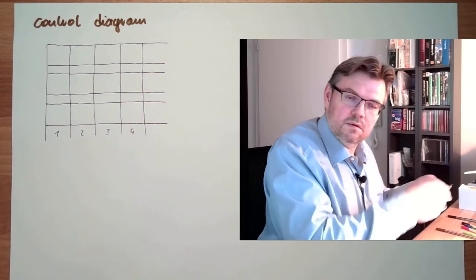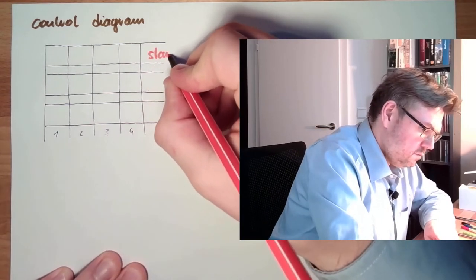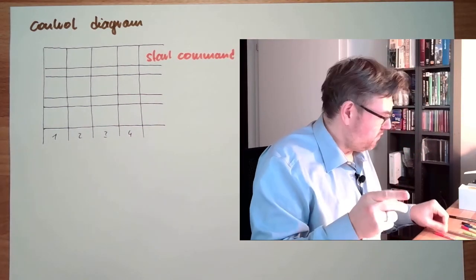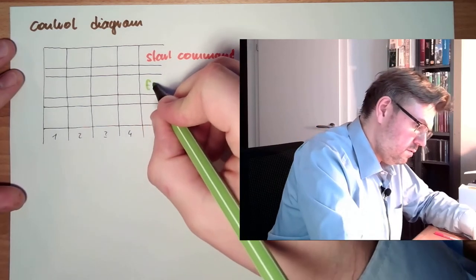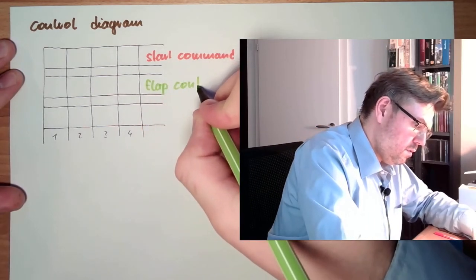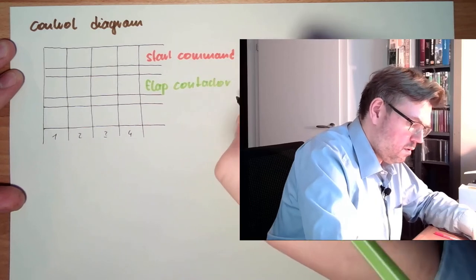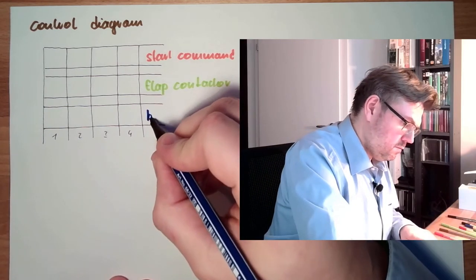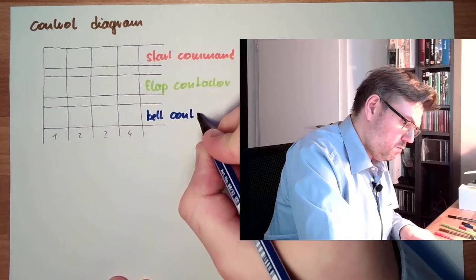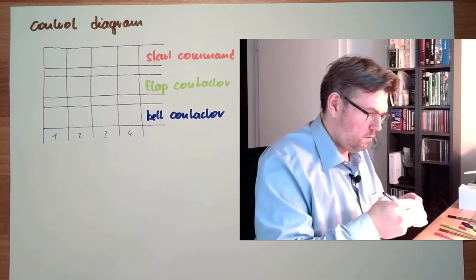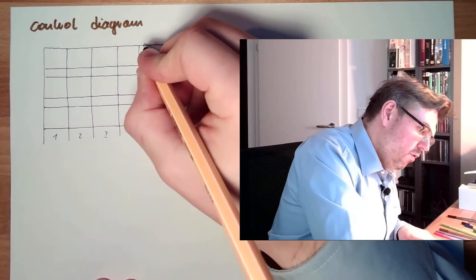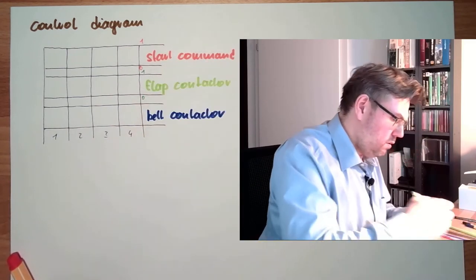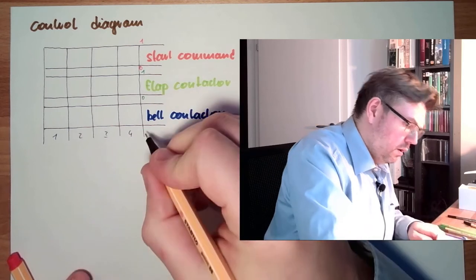One is the start command. One is the flap conductor. And one is the belt conductor. And they're all either turned off or on. Zero or one. Zero or one.